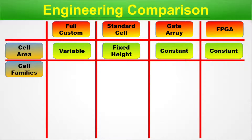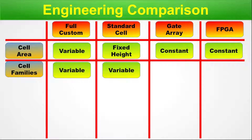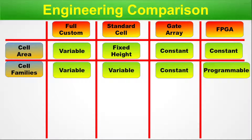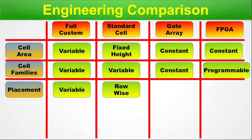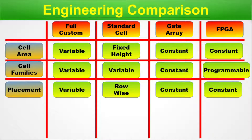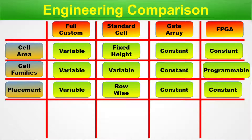Next parameter: placement — placing cells before wiring. Full custom is variable. Standard cell is row-wise. Gate array is constant because it is already an array. FPGA is also constant as an array. Next parameter: interconnect. Full custom is variable. Standard cell is variable — wiring done at the metal layer. Gate array is also variable. FPGA interconnect is programmable.